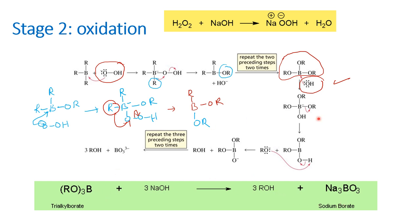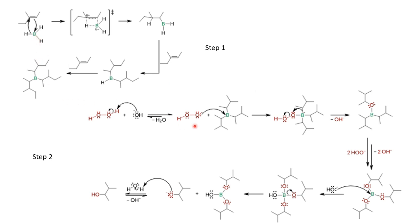The overall reaction: trialkyl borate reacts with three molecules of sodium hydroxide to form three molecules of alcohol and sodium borate. So three molecules of alkene form three molecules of alcohol. The same process can be shown with specific molecular structures instead of R groups.